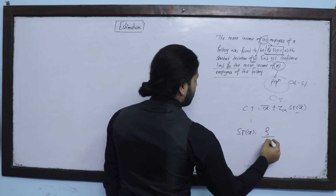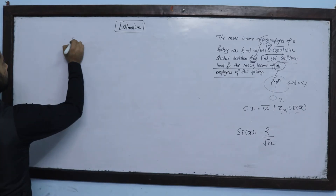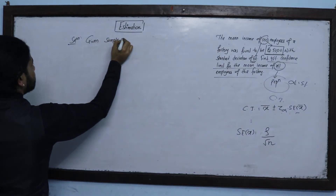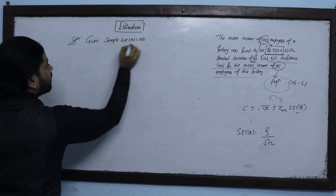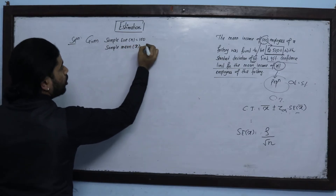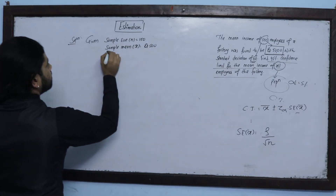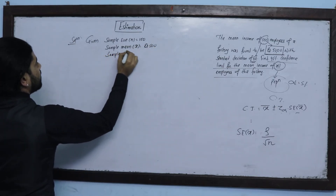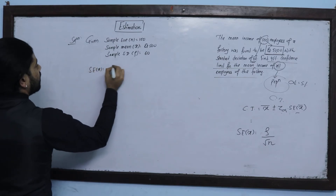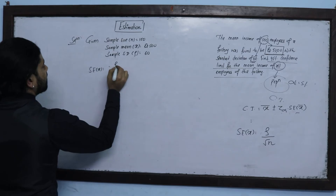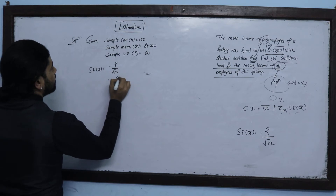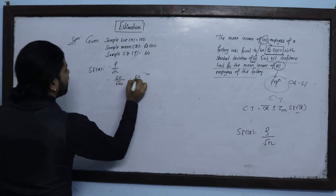The standard error of the mean is sample standard deviation upon root n. Given: sample size n equals 100, sample mean X̄ equals 5,000, sample standard deviation equals 60. So standard error equals 60 divided by root 100, which is 60 divided by 10, equals 6.